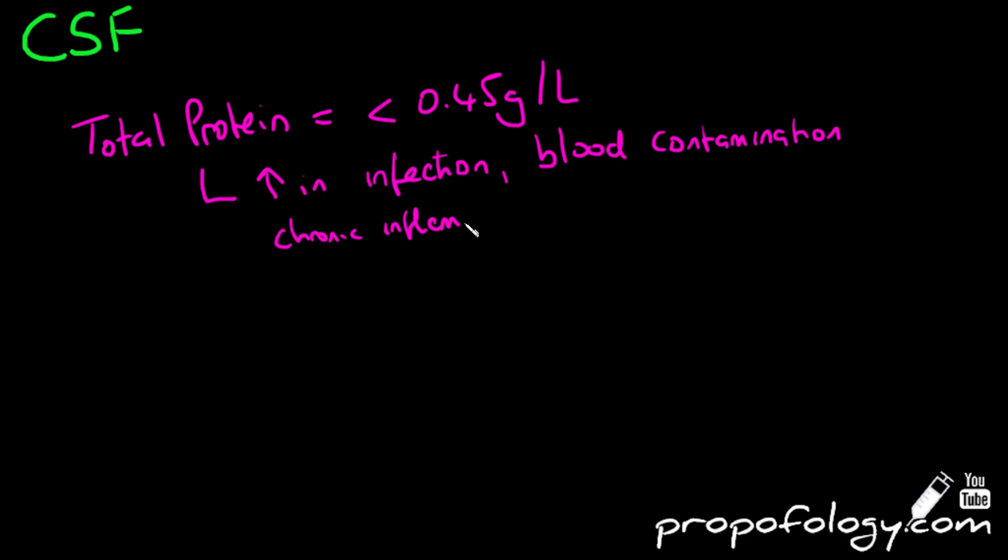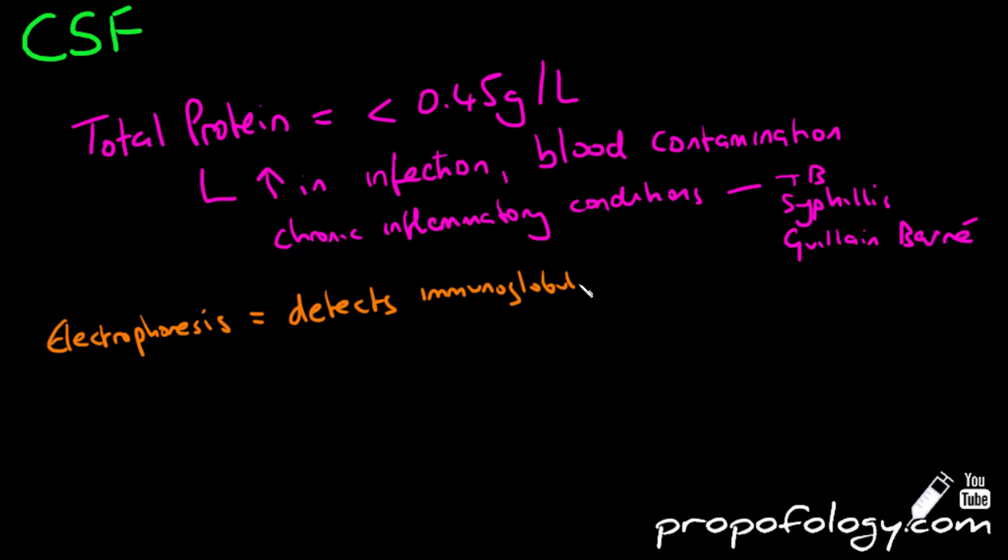You can also perform an electrophoresis study on your CSF sample. Electrophoretic separation of CSF proteins and detection of CSF immunoglobulin is important because CSF immunoglobulin can arise from three causes: either secondary to an increase in plasma immunoglobulin like in multiple myeloma, or impairment of the blood-brain barrier where the proteins are actually able to cross the blood-brain barrier.